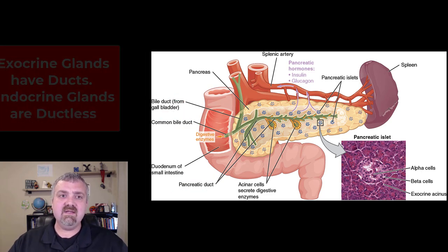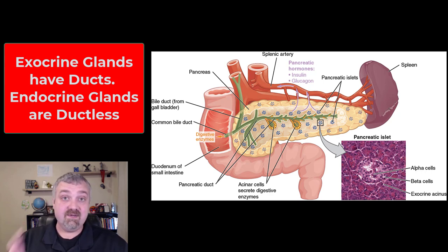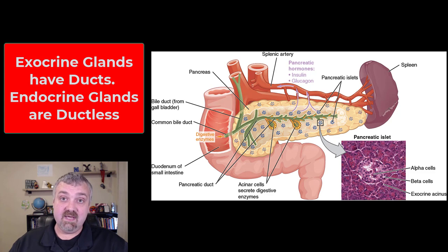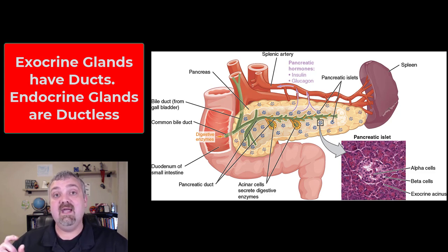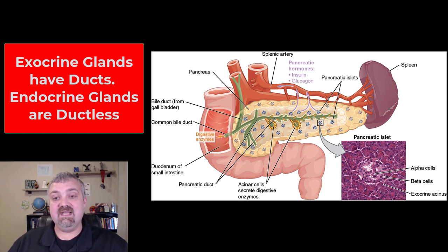That's the other key thing: endocrine glands are ductless — they don't have ducts. Exocrine glands do have ducts. So endocrine glands have no ducts and dump their secretions into your blood and body fluids. Exocrine glands use ducts and dump their secretions onto surfaces — think your skin and the hollow tube running through your body, your gastrointestinal tract.